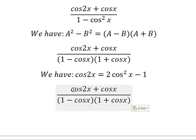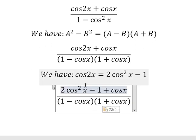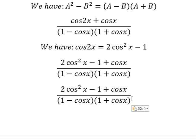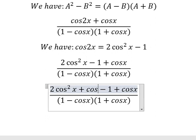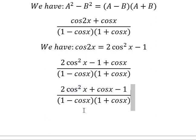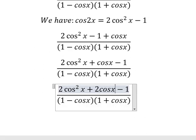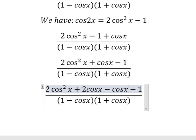So we need to transform this one into this one. This is about 2cos² x - 1 + cos x.